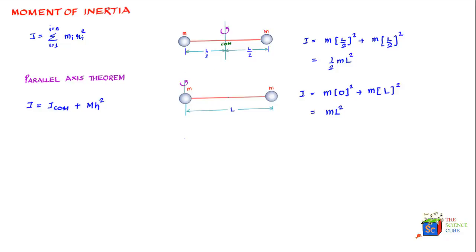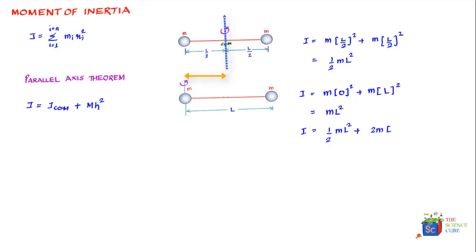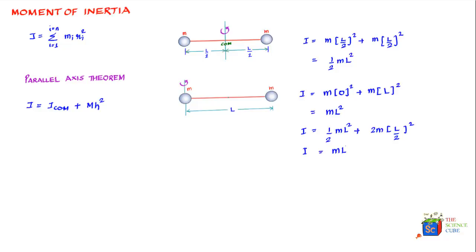Applying the parallel axis theorem to our two-mass system: the moment of inertia when the axis passes through one of the masses is I = I_cm + Mh². Here I_cm = ½ml², the total mass is 2m, and the axis has shifted by l/2, so I = ½ml² + 2m·(l/2)² = ml², confirming our earlier result.